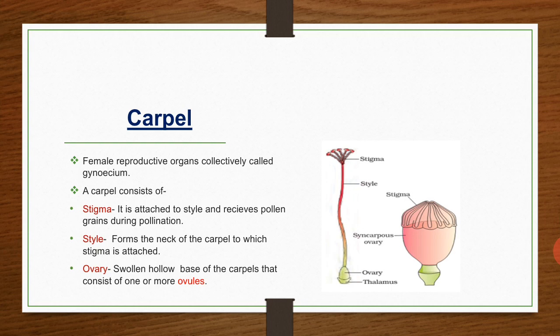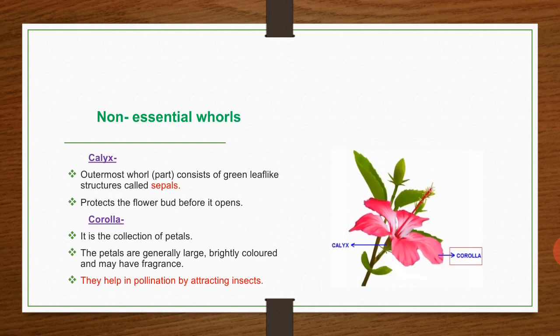Ovules will give rise to seeds after fertilization, and the ovary will give rise to fruit after fertilization. Therefore, seeds and fruits are the products of sexual reproduction in flowering plants. The non-essential whorls in a flower are calyx and corolla. Calyx is the outermost whorl, consisting of green leaf-like structures called sepals, which protect the flower in bud condition. Corolla is the collection of petals — the petals are large, brightly colored, and may have fragrance, helping in pollination by attracting insects.